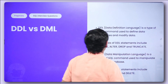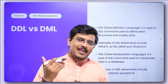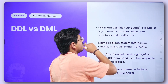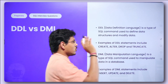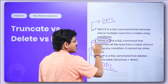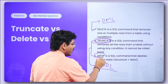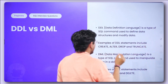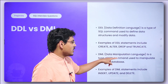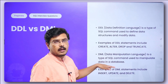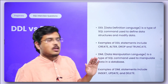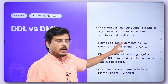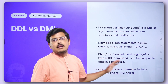Moving forward, let's talk about DDL versus DML. DDL is data definition language — a type of SQL command used to define data structures and modify data. It modifies or removes the structure altogether, which is why truncate and drop are DDL. DML is data manipulation language — a type of SQL command used to manipulate data without altering structures. Examples of DDL are create, alter, drop, and truncate. Examples of DML are insert, update, and delete.